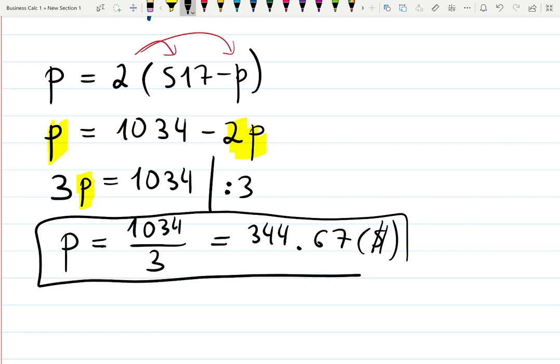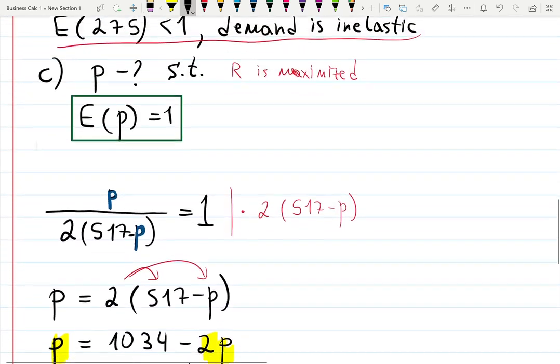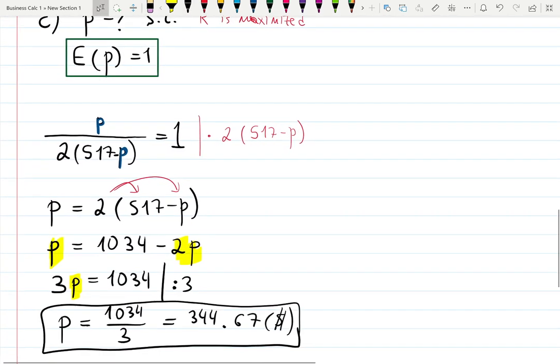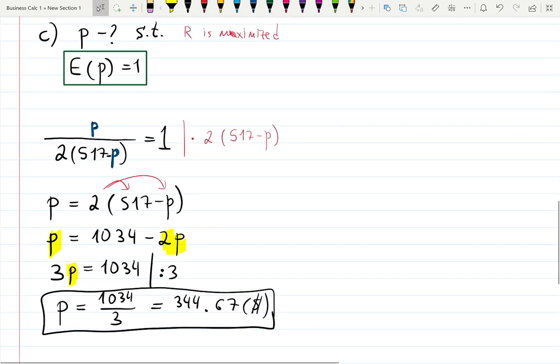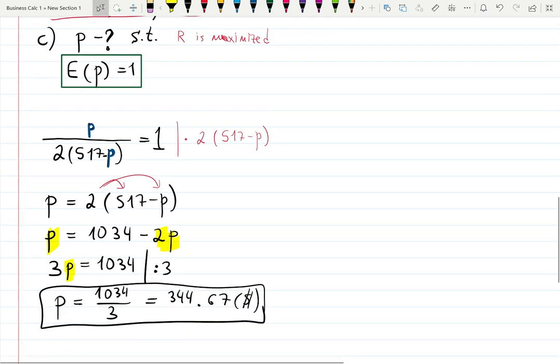So at this price, we know that the revenue will be maximum because at this price E(p) was 1. That's how we solved it. That's how we answered the question—we were looking for p when E(p) is 1 through the equation, and we got the answer.